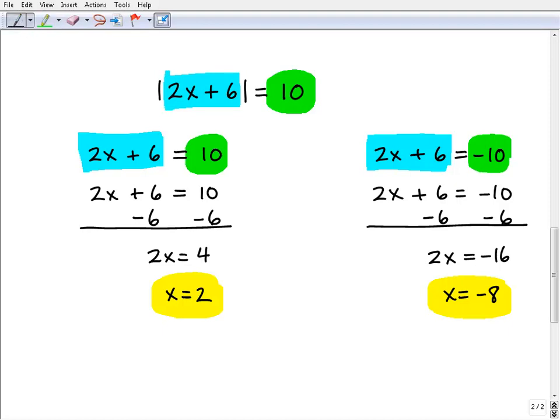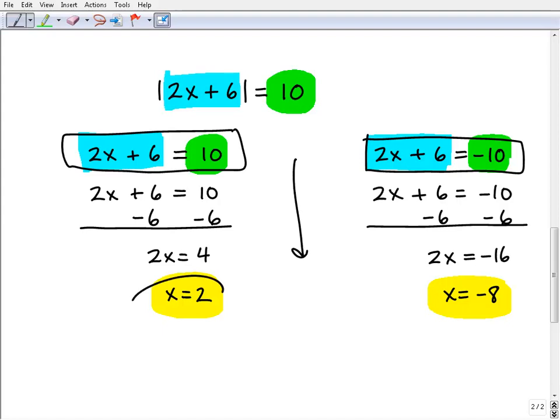What that leaves us with is two equations to solve: 2x plus 6 equals 10, and 2x plus 6 equals negative 10. Here you can see the steps to solve those two equations, leaving us with these two answers.